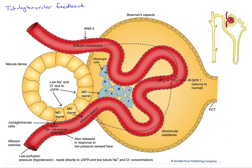Here we want to look at tubuloglomerular feedback, which means the nephron feeds back to the glomerulus in the aid of regulation of GFR. This is going to occur through both autoregulatory and hormonal mechanisms.